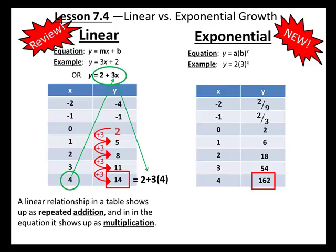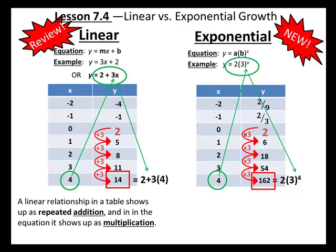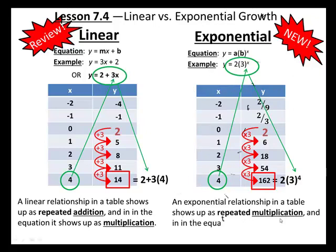If we take a look now at how did we get this 162 in the table here for exponential, we did once again start with an initial value, which is 2, and from there we multiplied by 3 four times. Which written out the long way would look like that, but we should know a short way to write repeatedly multiplying by 3 four times would be to write it as 3 to the fourth power. The 4 being the value of x that gets substituted into our equation up here that allows us to do the calculation down here to get the 162. So what you should be seeing in an exponential relationship in a table will show up as repeated multiplication, and in the equation it shows up as a variable exponent.